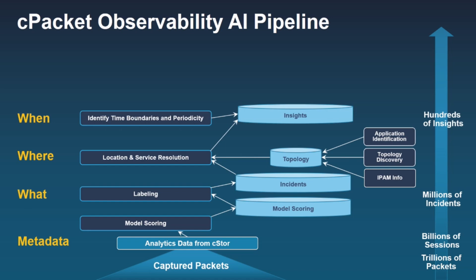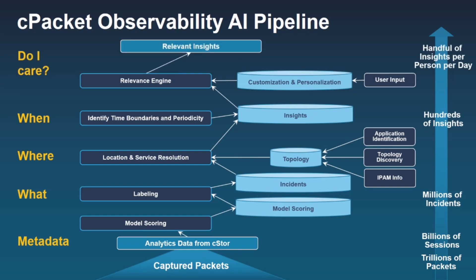The challenge is that when a person comes in to work in the morning, they're not going to act on more than a handful of things that day. So the next level is the relevance engine — asking, do I care about that? There's customization: maybe this load balancer always behaves anomalously, so filter it out. And there's personalization: if I'm a network operation engineer who cares about data center one, remove data center two from my view, or separate security from network operations. The idea is to take trillions of packets down to a handful of things the network operations engineer needs to know when they come to work.